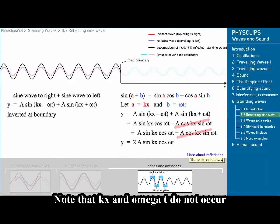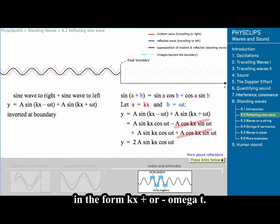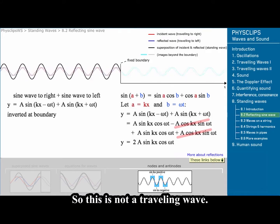Note that kx and omega t do not occur in the form kx plus or minus omega t. So this is not a travelling wave.